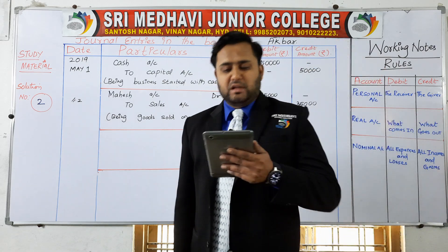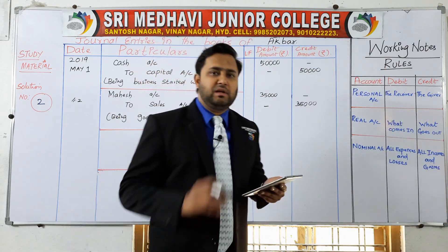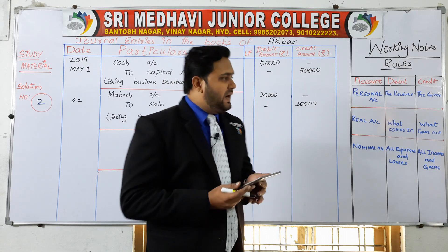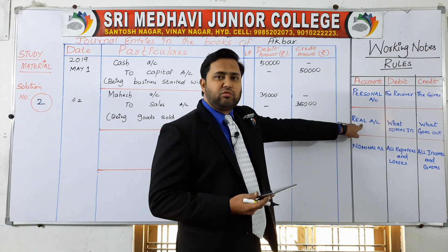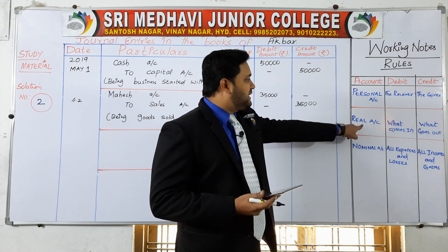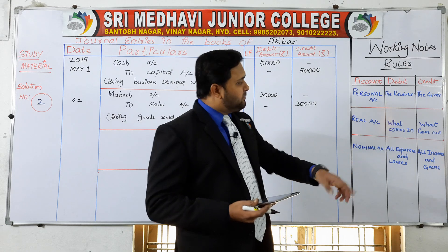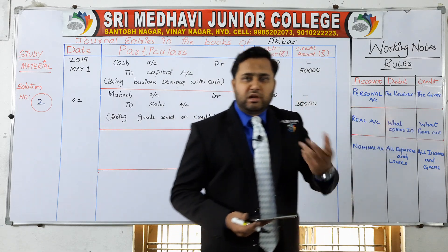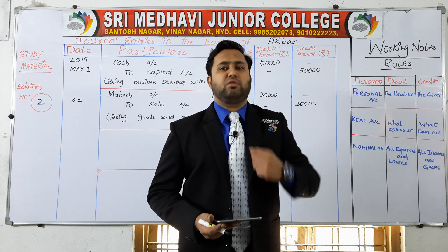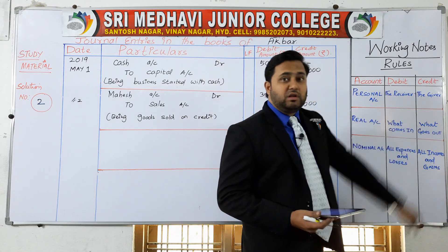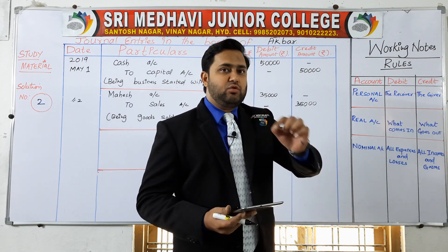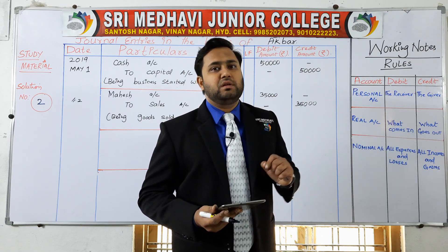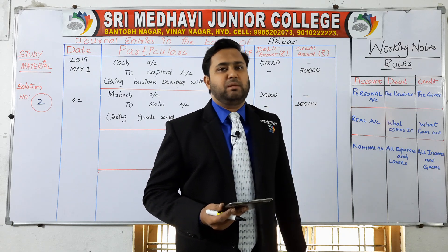Next entry: cash paid to Pramodh. We are paying the cash. Cash comes under real account; cash is an asset. We are paying cash, so credit what goes out — cash is going out. So credit what goes out. Then who is going to be debited? The person to whom we are paying: Pramodh. If cash is credited, then Pramodh is debited.